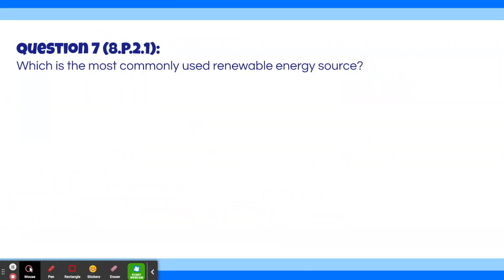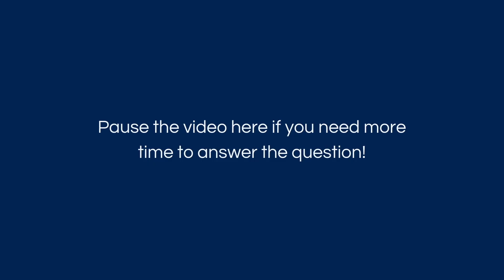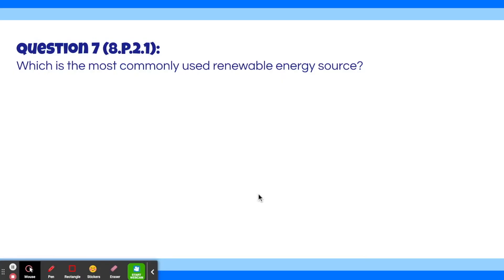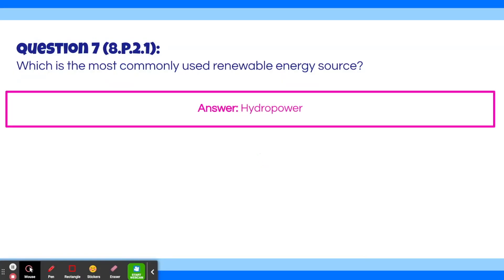Question 7. Which is the most commonly used renewable energy source? The answer is hydropower. Hydropower is simply the most commonly used renewable energy source.